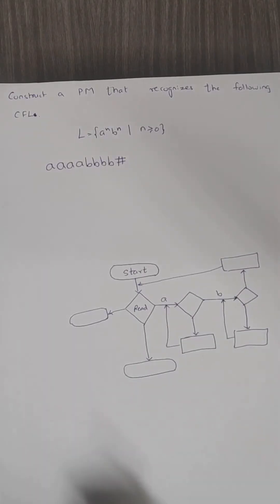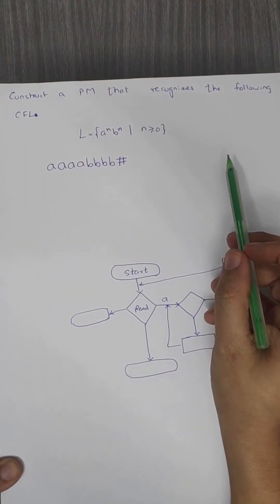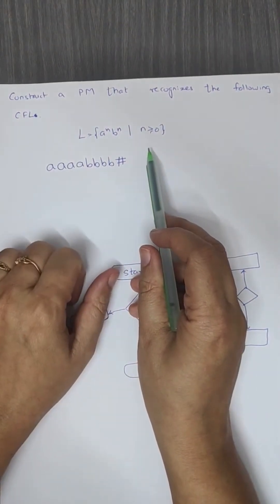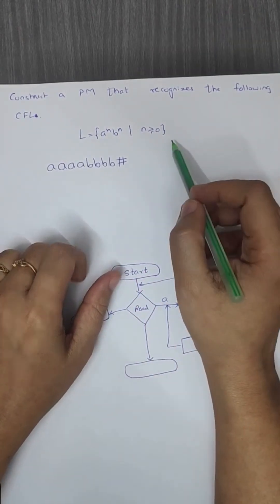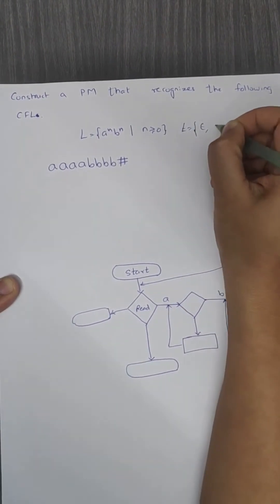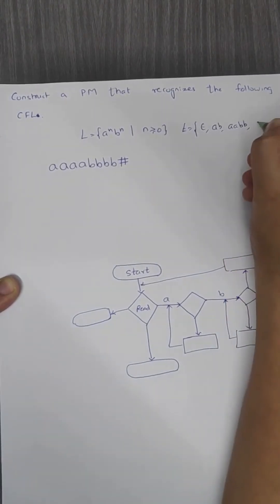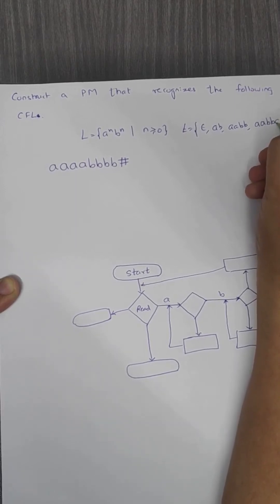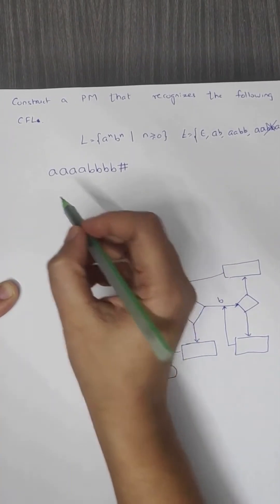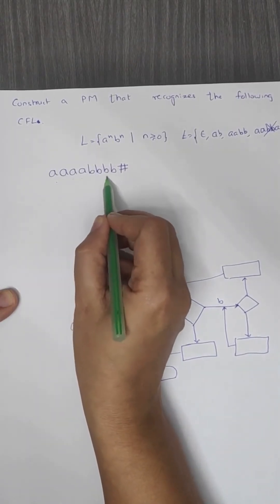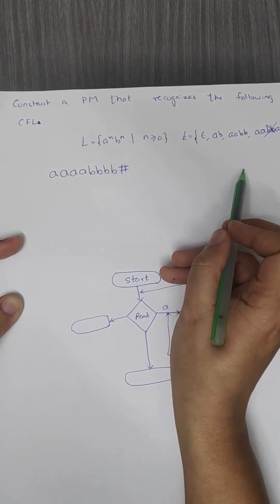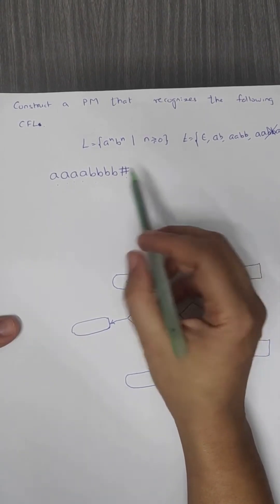Let us construct a Post Machine that recognizes the context-free language L = a^n b^n where n ≥ 0. That means the number of a's should be exactly equal to the number of b's, with all a's together followed by all b's. So we can have strings like epsilon, a b, a a b b, and so on. The input will be saved on the tape as a a a a b b b b followed by hash, where hash indicates end of the string, and after that we have blanks.